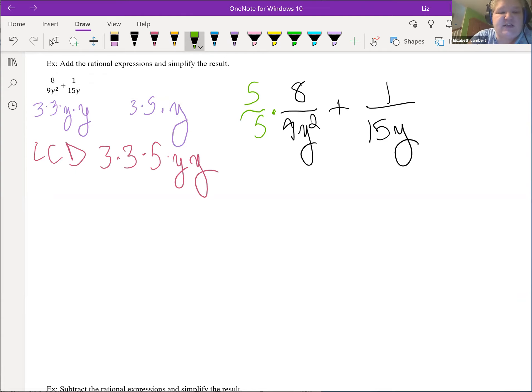Now our 15 only has a 3, a 5, and a y. So I need another 3 and another y. So just on this fraction, we will multiply by 3y over 3y.